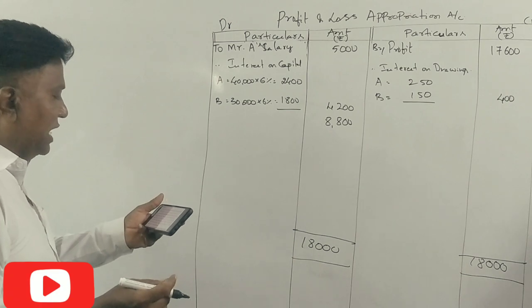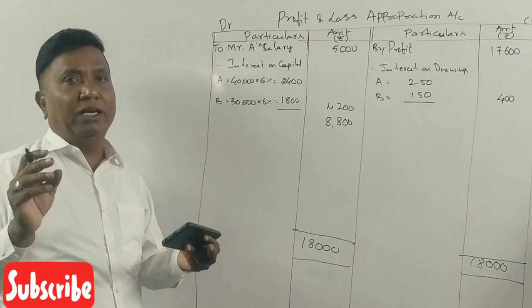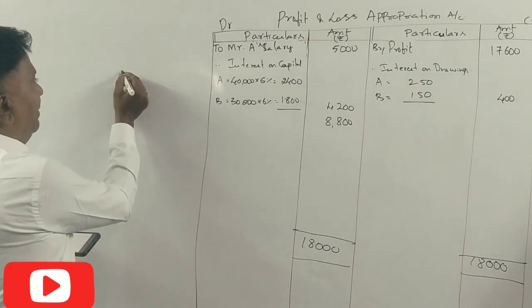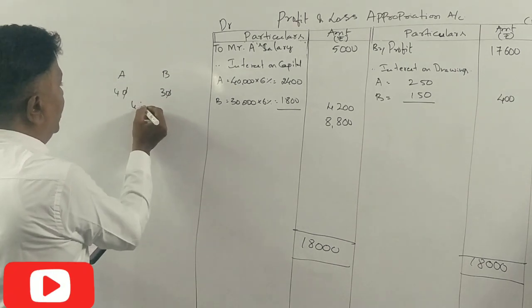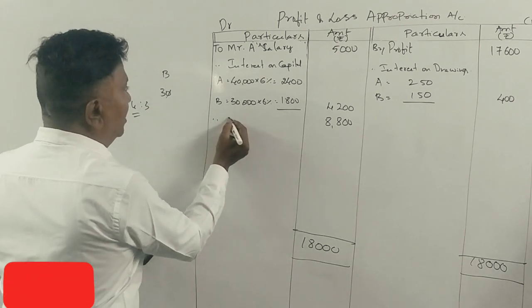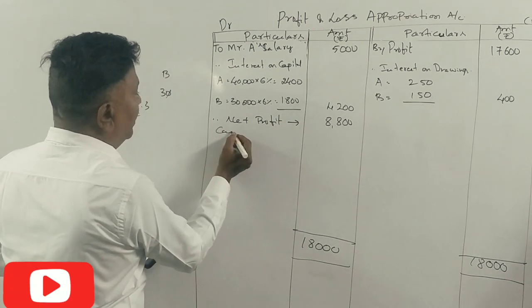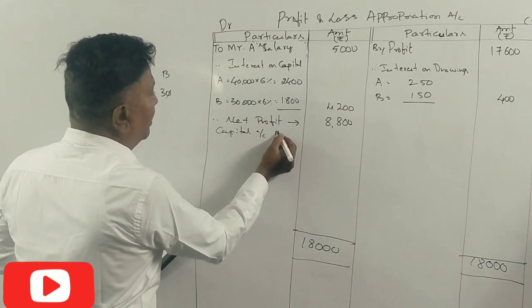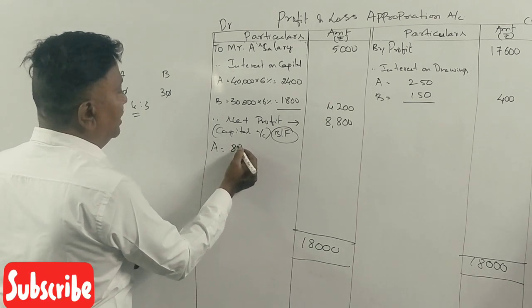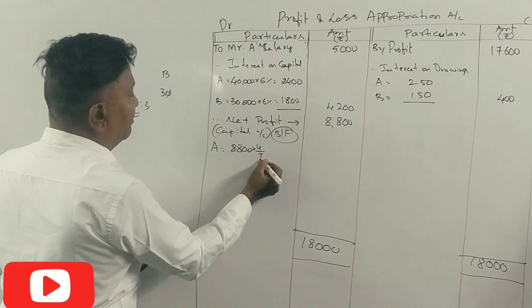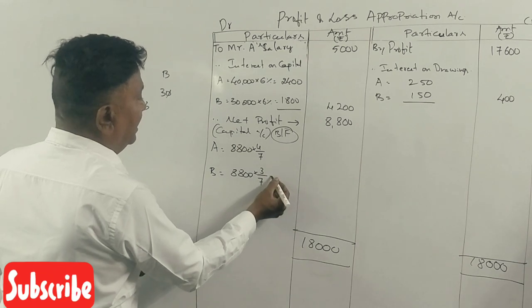Total is Rs. 18,000 minus Rs. 8,800 equals Rs. 8,800 remaining. The profit sharing ratio: they agree to share profits in the ratio of their opening capital. A's capital is Rs. 40,000, B's is Rs. 30,000, which is 4:3 ratio.